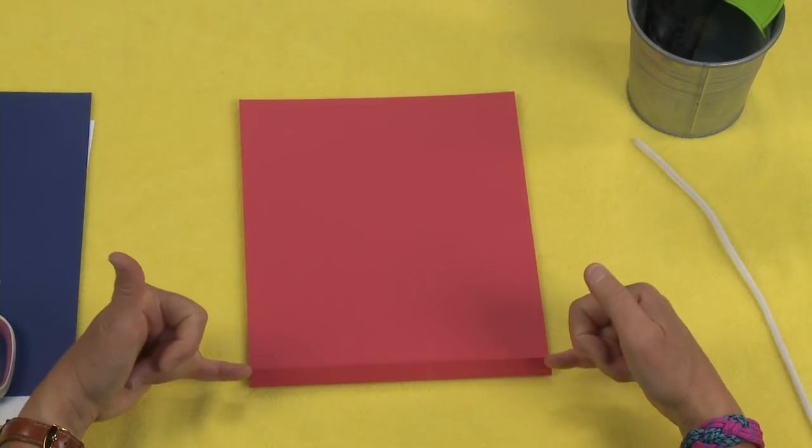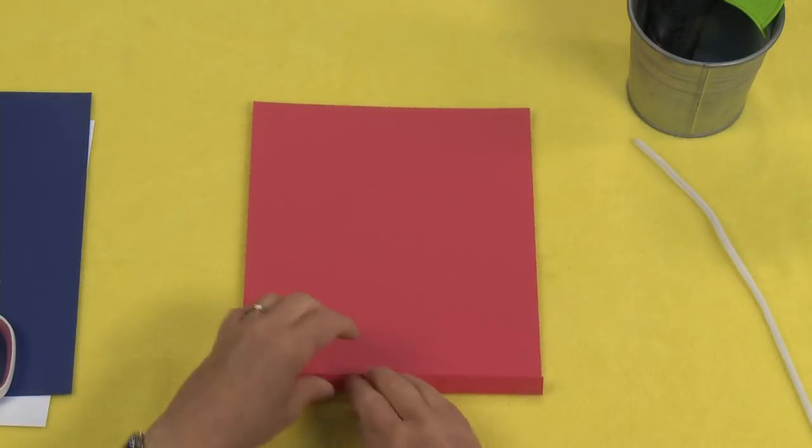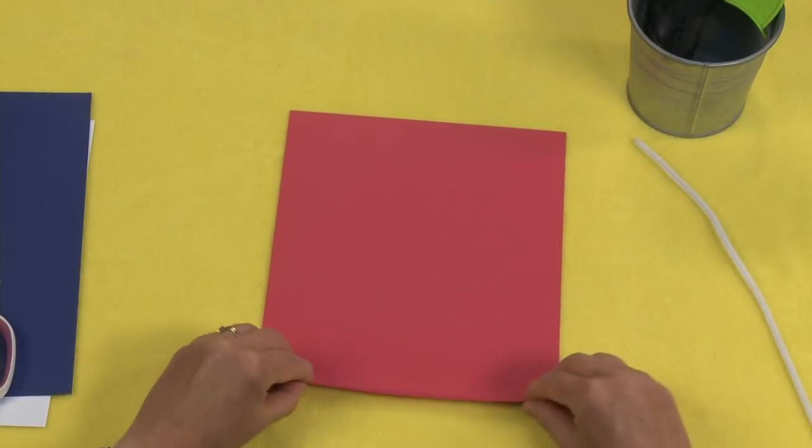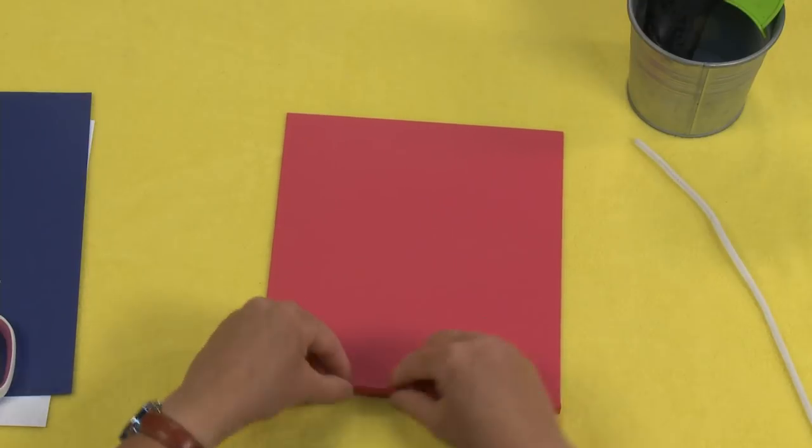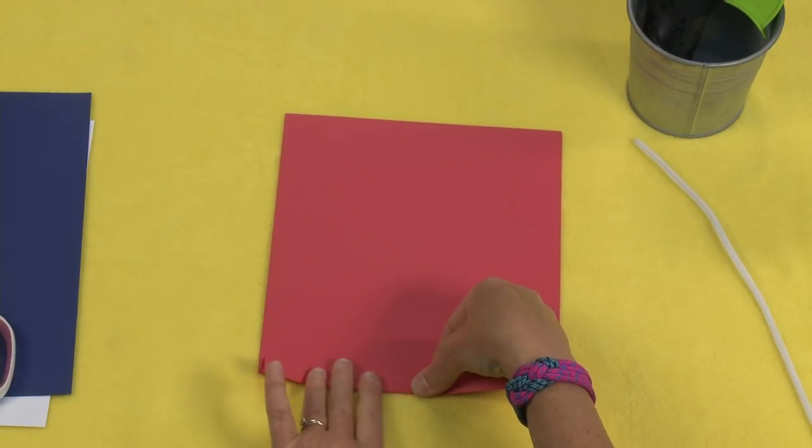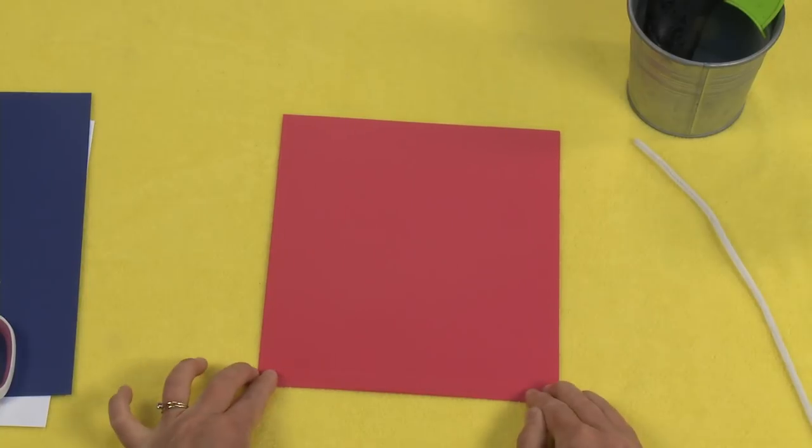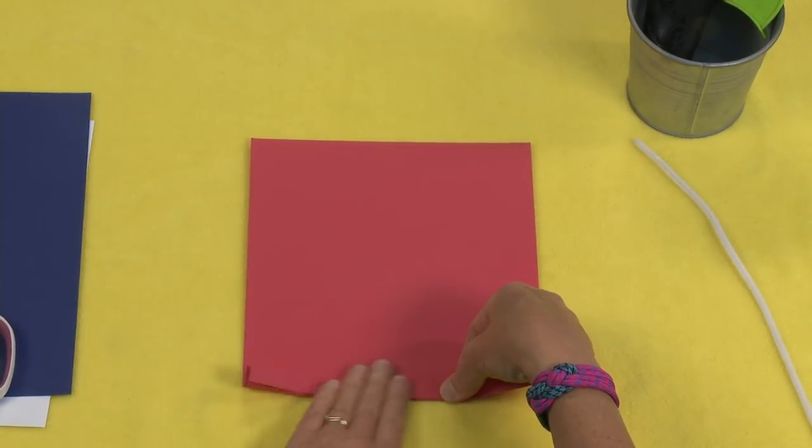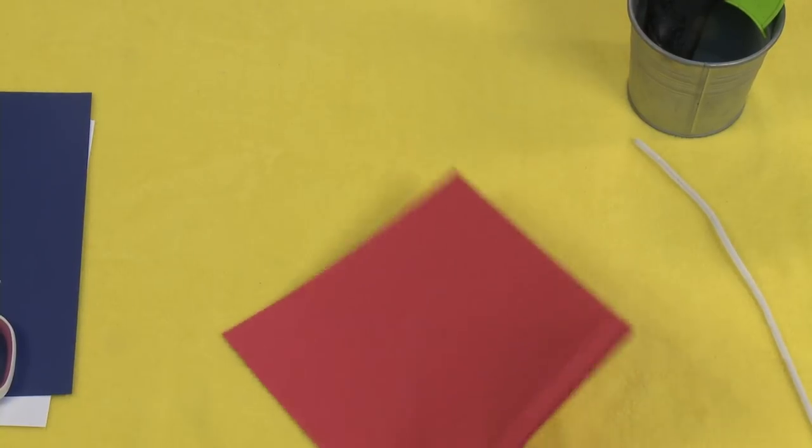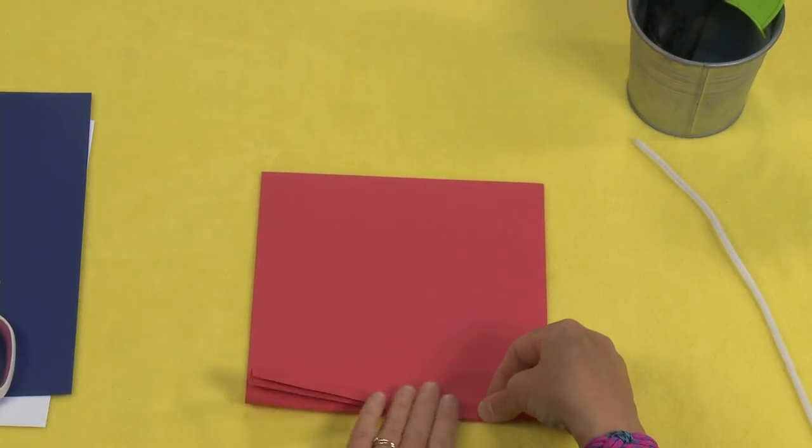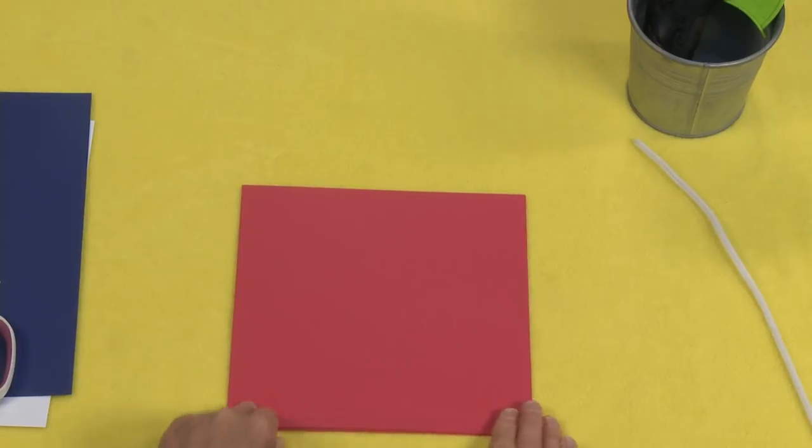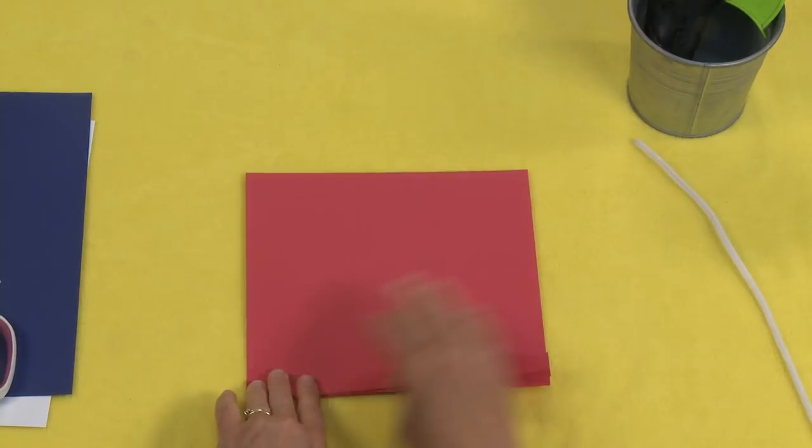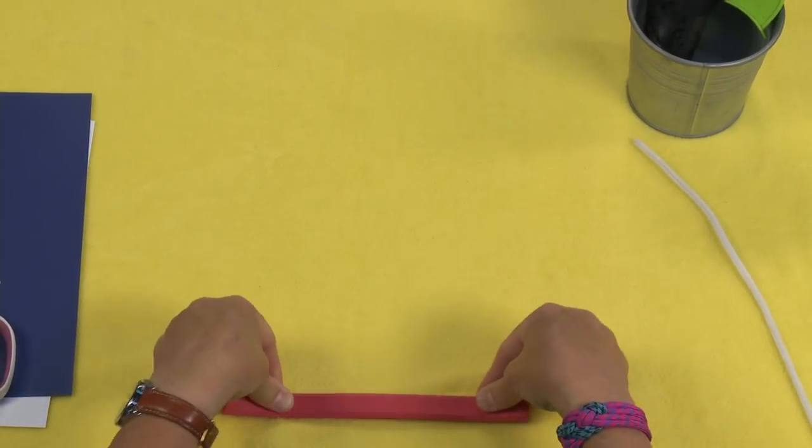I'm now going to fan fold from this end all the way to the top. What I do is I fold it up, flip the paper over, and using this as my guide I fold it to the line just like that. Then I flip it over and again, using this as my guide, fold up, and I keep flipping and folding, making sure that I stay along that line as my guide. And there we go.